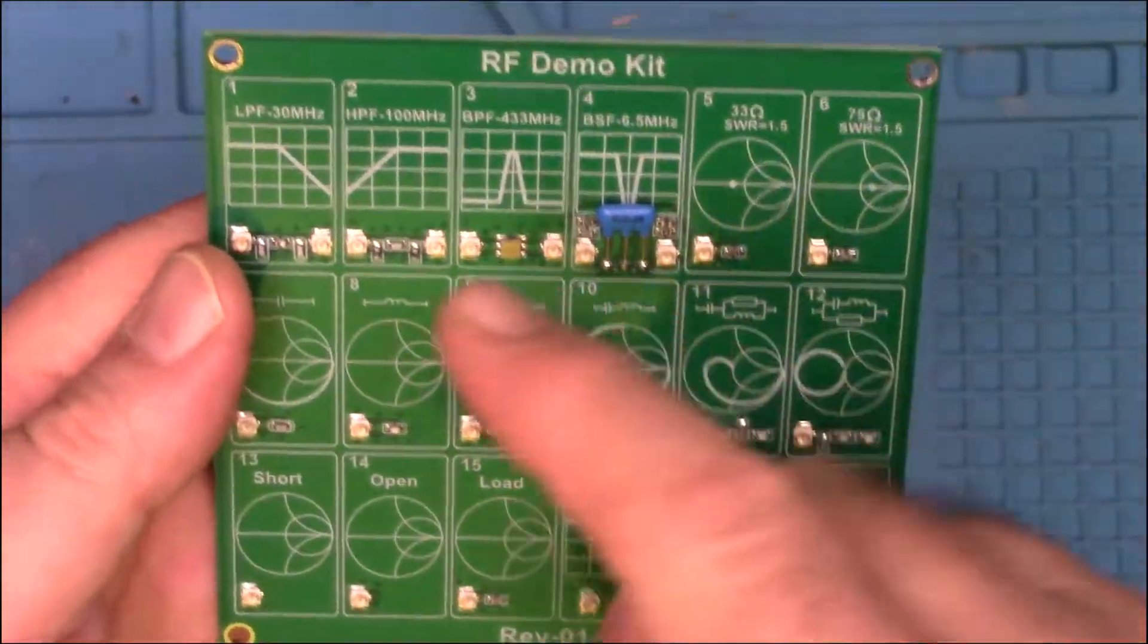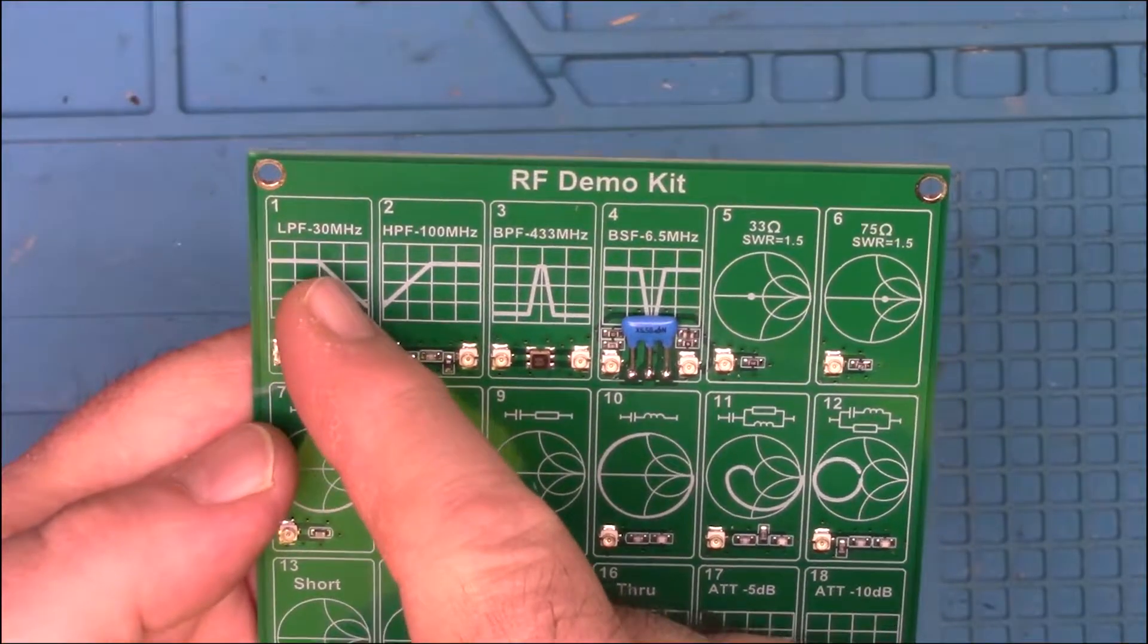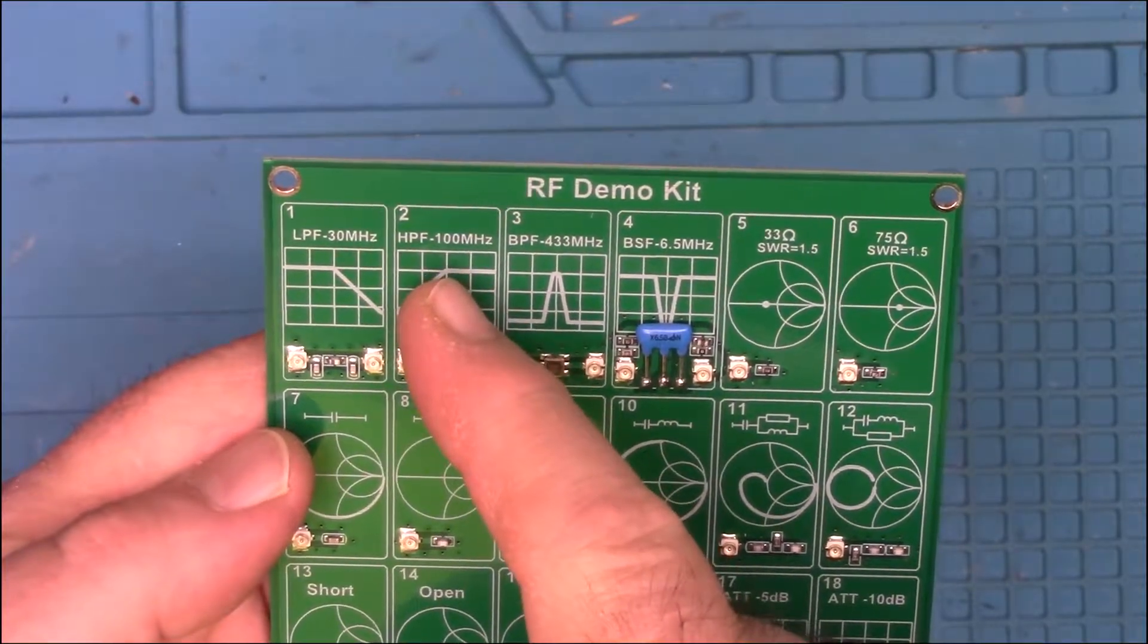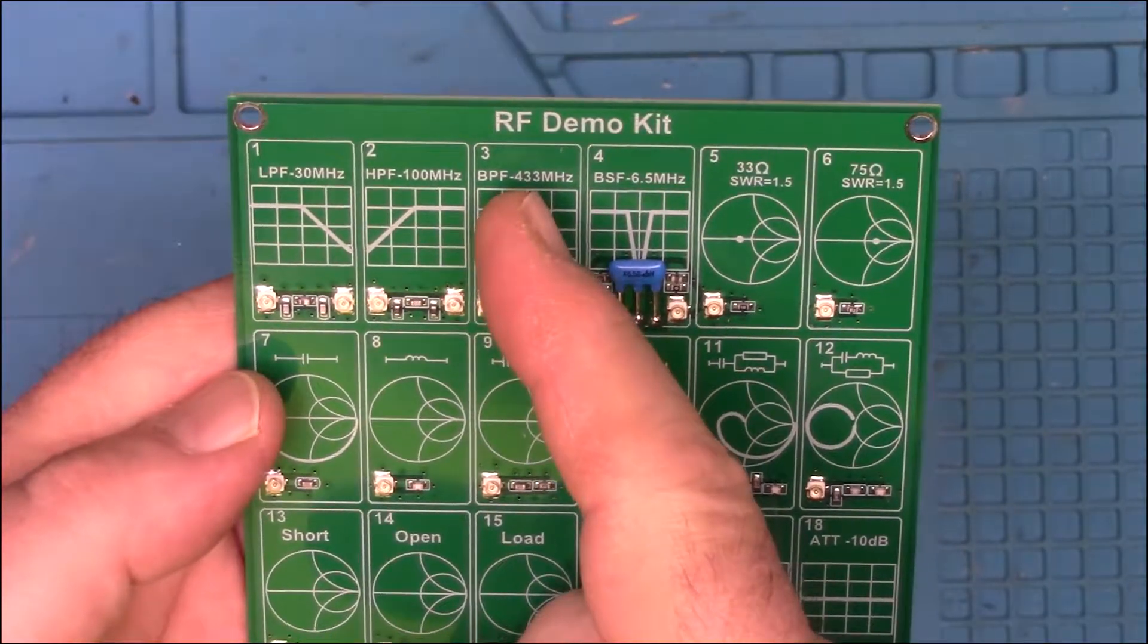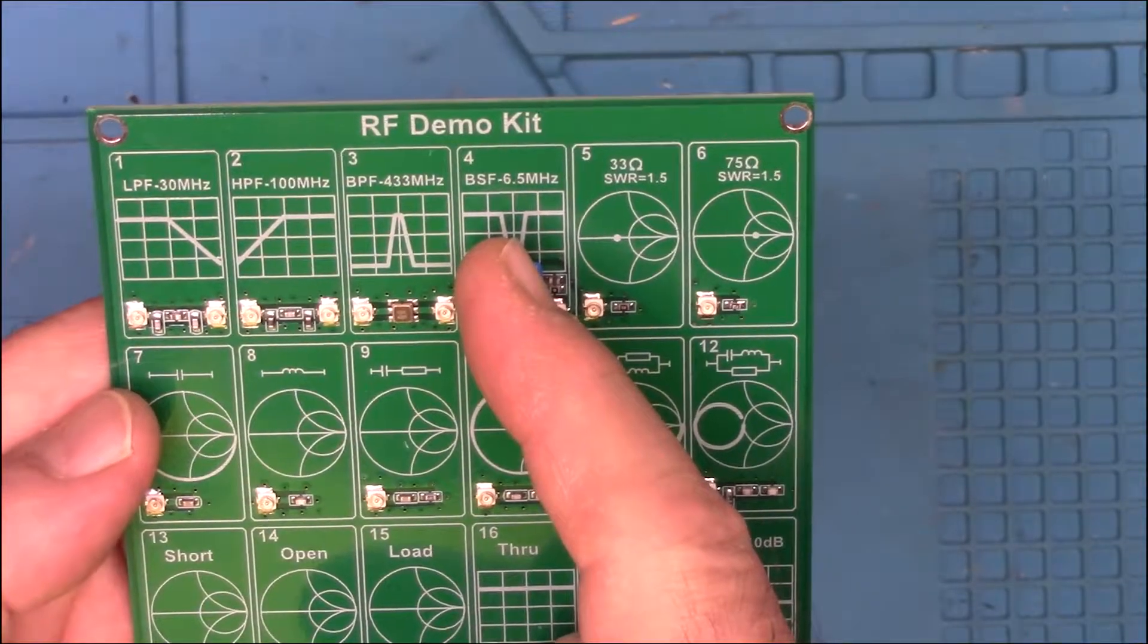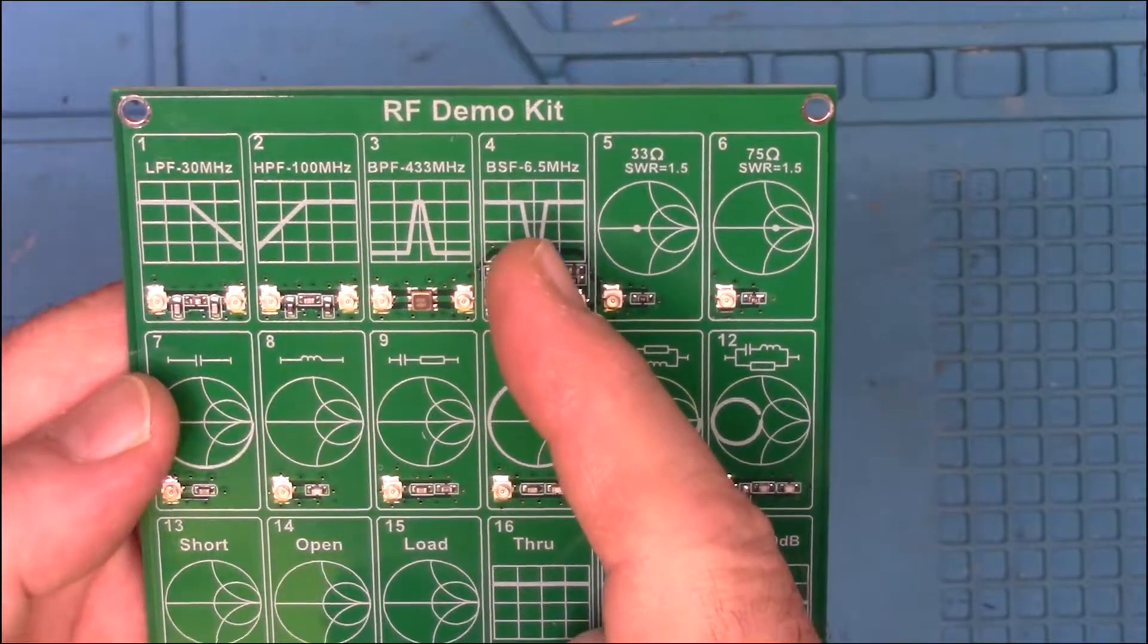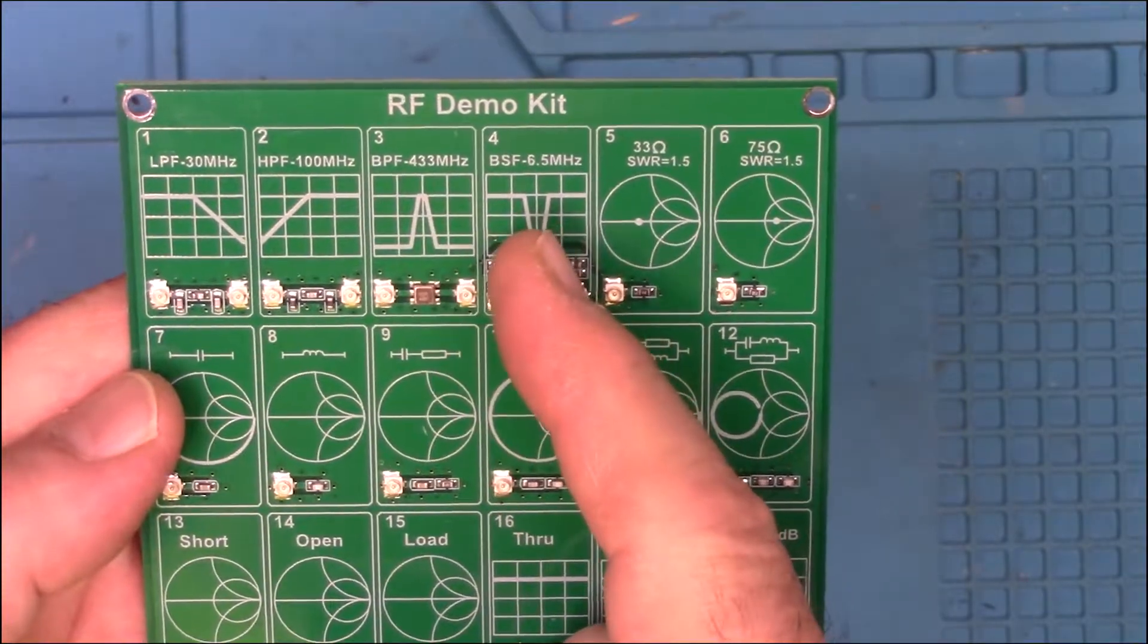So we have a low-pass filter and the picture shows the break is about around 30 megahertz. High-pass filter where the break is around a hundred. A band pass around 433. I believe, because I don't know what BSF stands for, I believe that's going to be a notch filter, kind of the inverse of that guy.